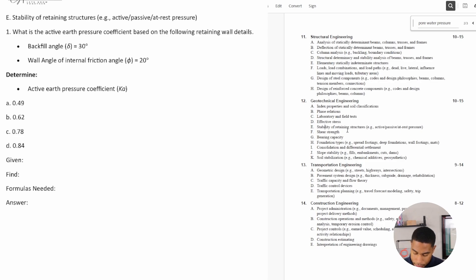Alright, so let's look at number one. Number one says: what is the active earth pressure coefficient based on the following retaining wall details? You got a backfill angle that looks like it's equal to 30 degrees, wall angle of internal friction is equal to 20 degrees. Determine the active earth pressure coefficient.